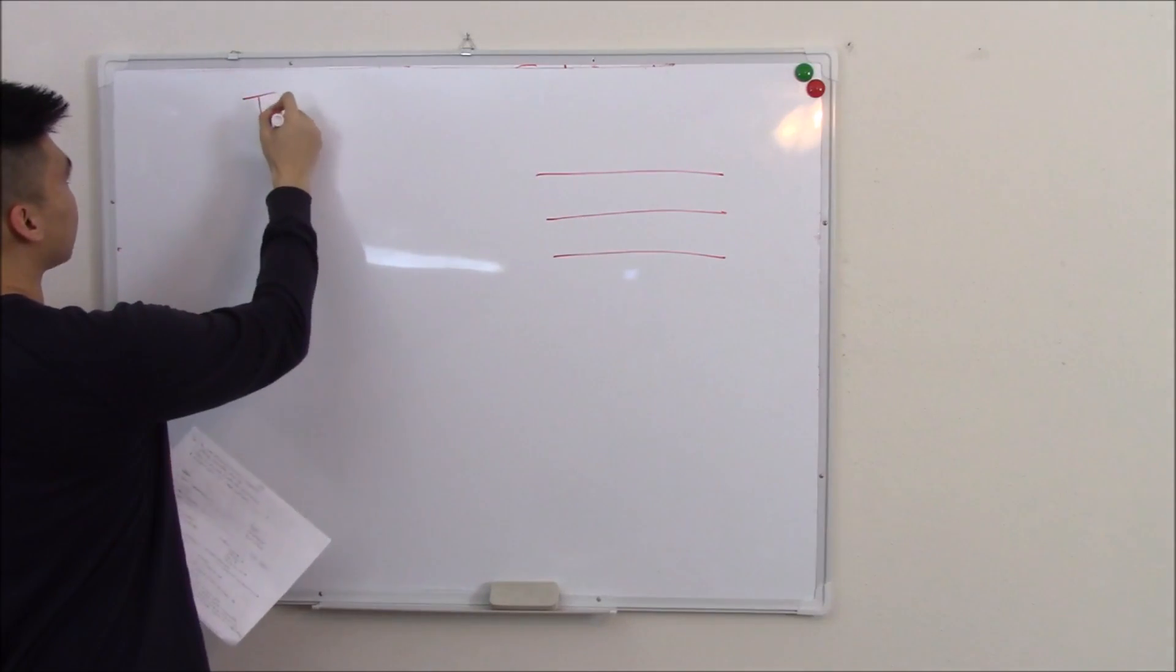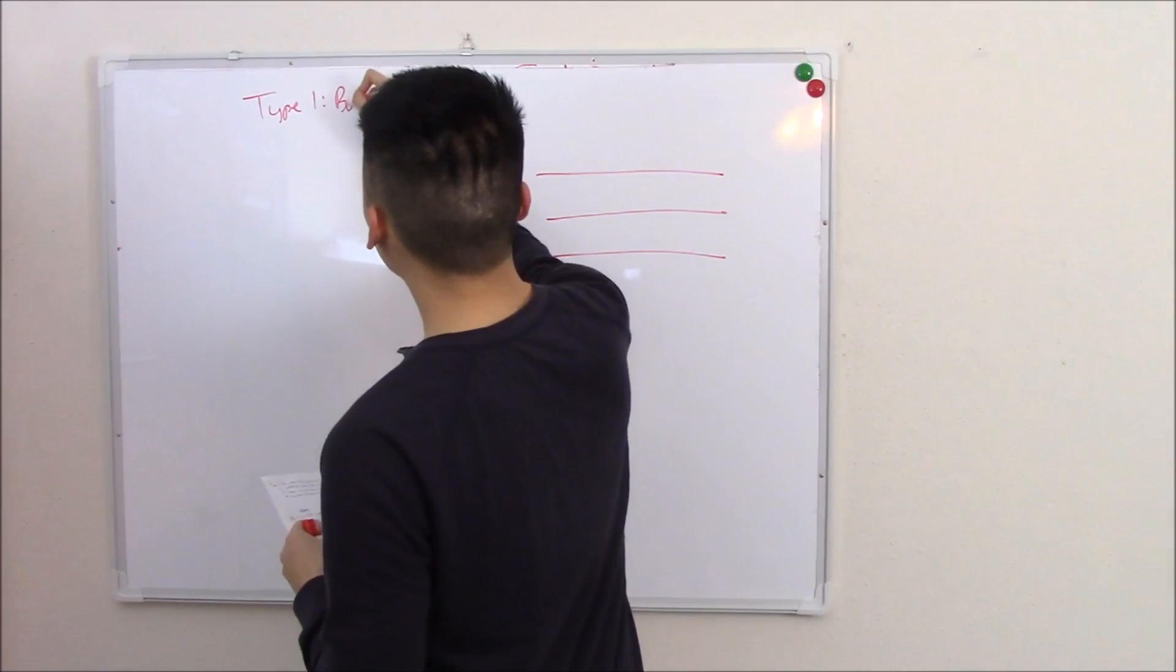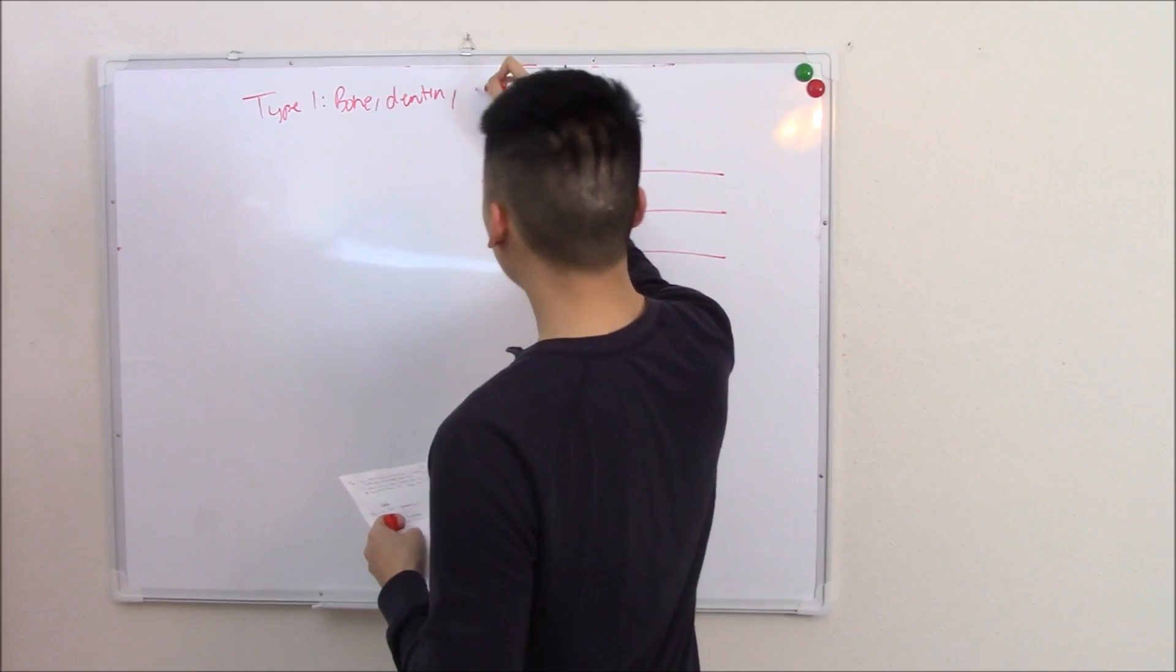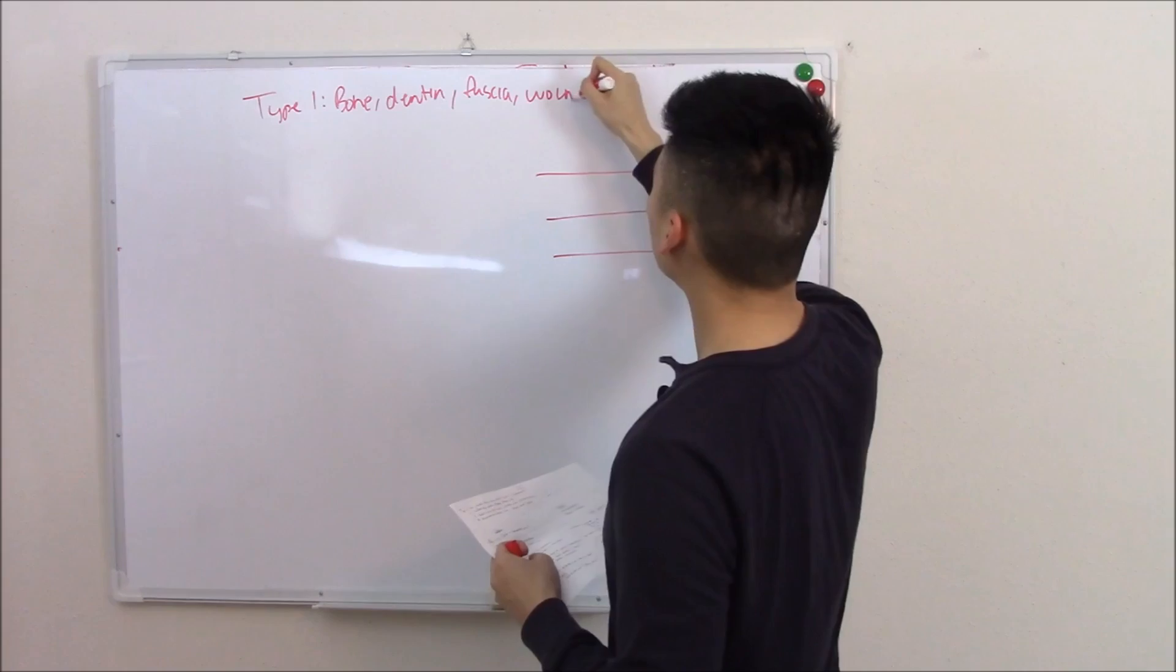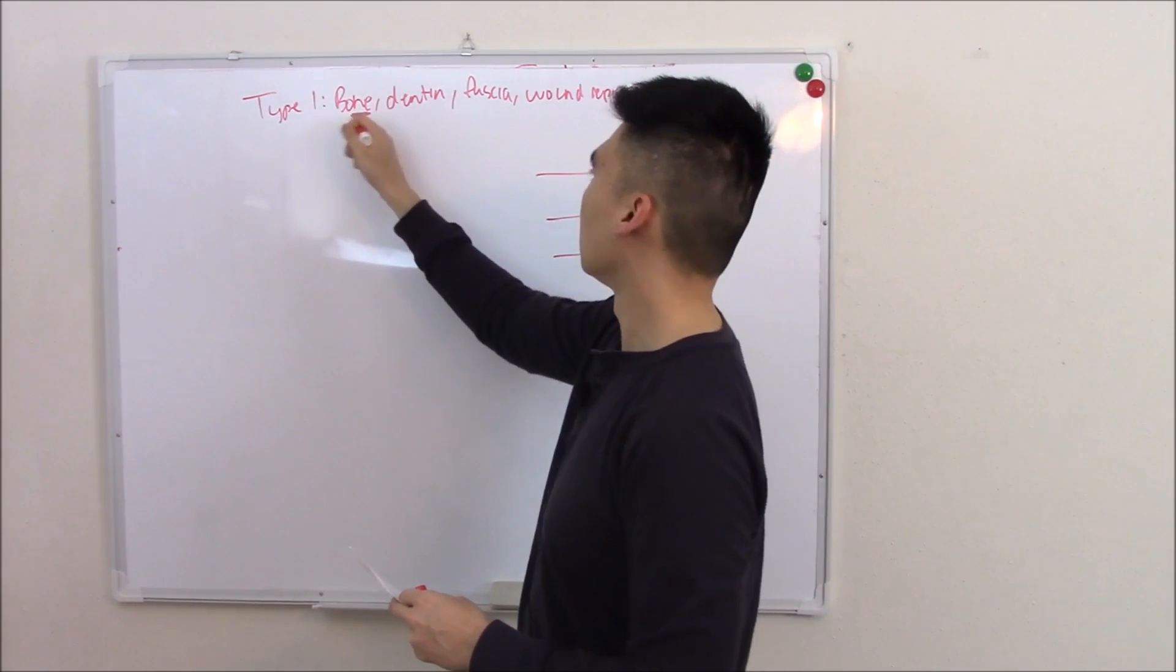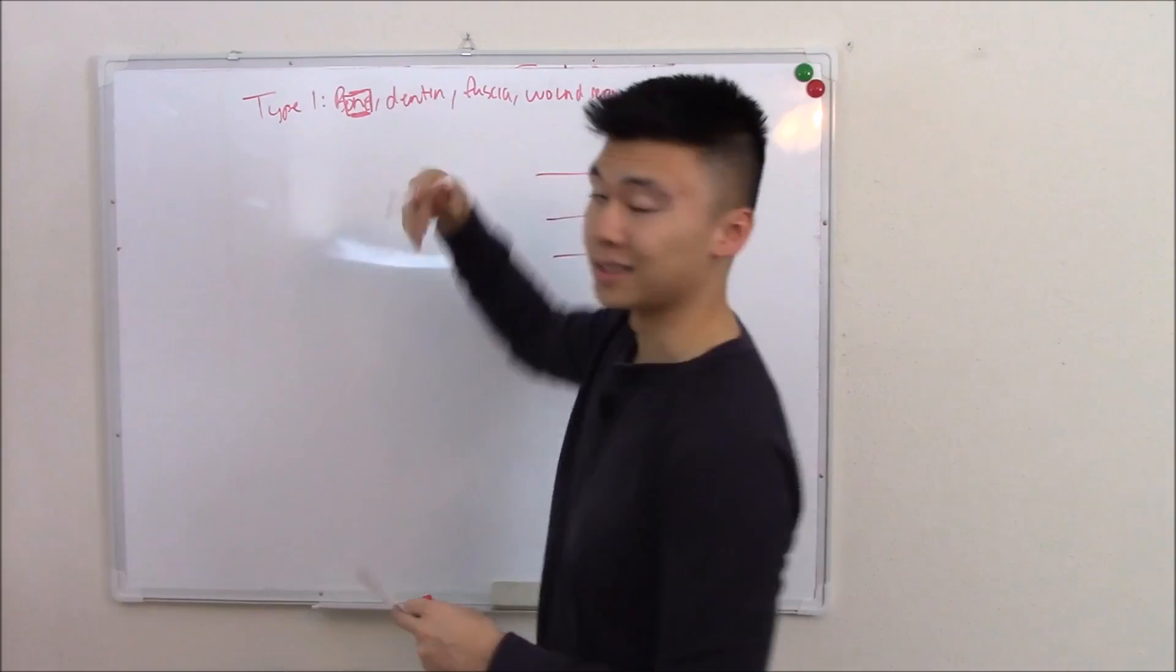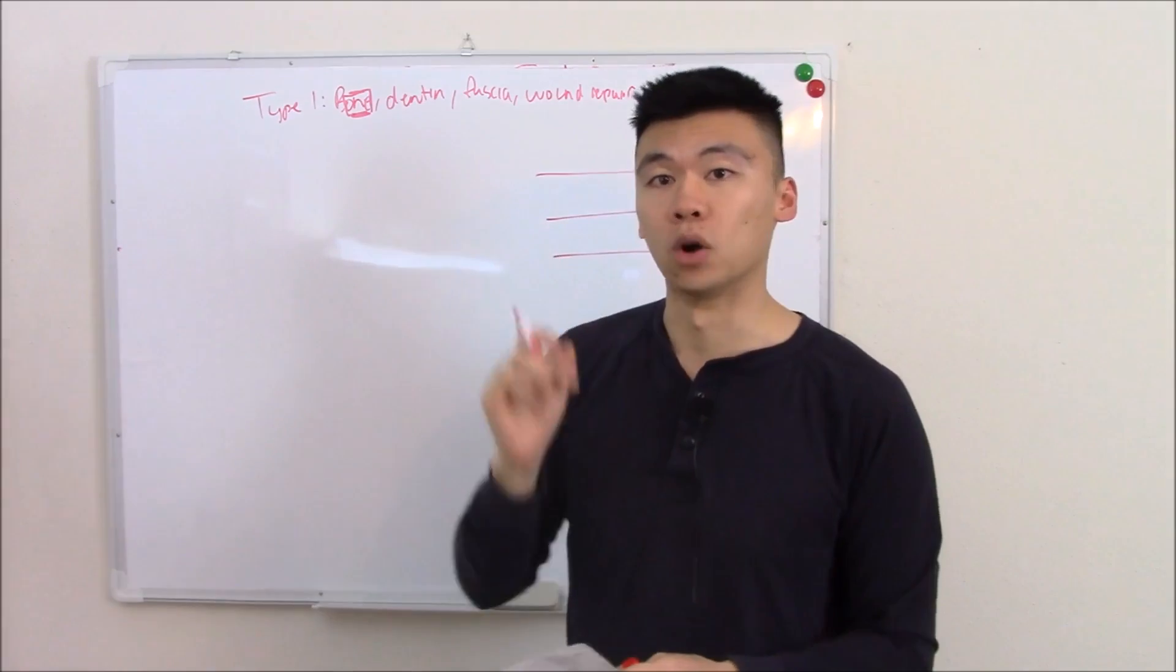Type 1 is found mainly in your bone, as well as your dentine, fascia, and is seen in wound repair. By far the most important is that it's found in your bone. There's one, the word one inside of bone. That should help you memorize that type 1 is associated with bone.